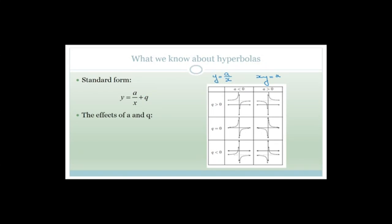The effects of q are as follows. If q doesn't exist — if q is zero — then the graph is the original graph of y equals a over x. Do you agree that it would be basically either in the second and fourth quadrant or first and third quadrant? The asymptotes are the x-axis and the y-axis. If q exists and it's bigger than zero, the graph has moved up, so its horizontal asymptote is going to have a proper value, not zero.